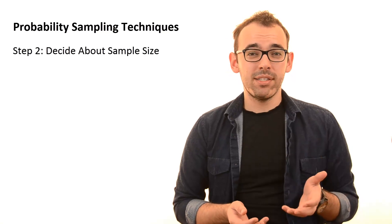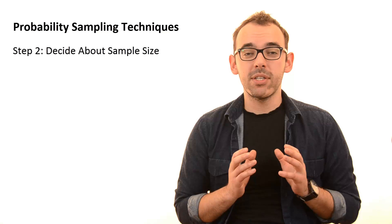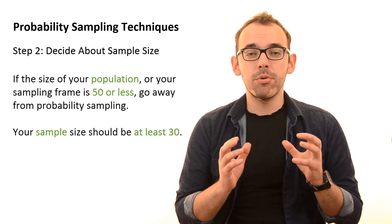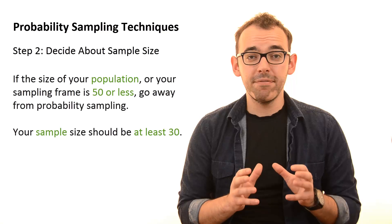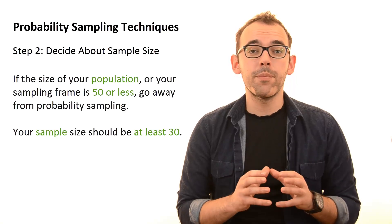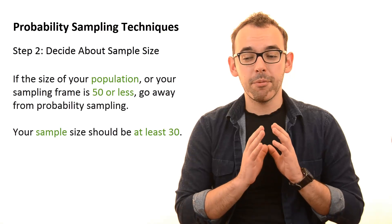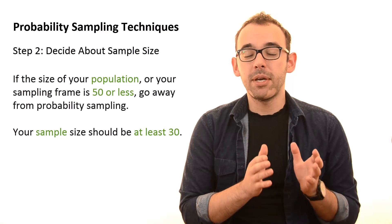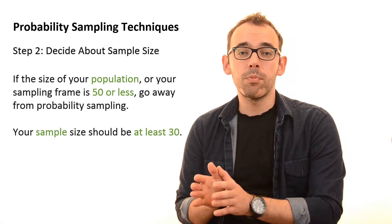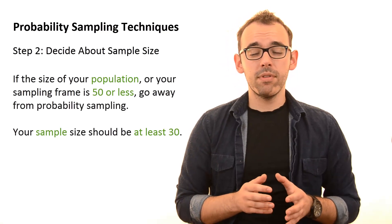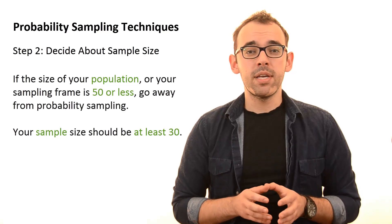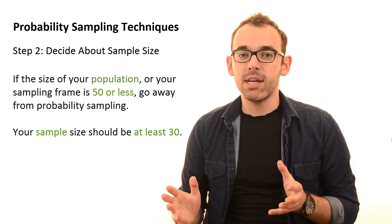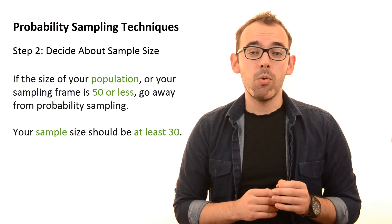Now here we come to statistics, and this is not the statistics course, so I will be simplifying a lot. There are two rules of thumb: if your population is less than 50, you should go away from probability sampling techniques — so if your population is 40 or 45, probability sampling techniques are not for you because some biases can occur, so rather go for non-probability sampling techniques. The second rule of thumb is that your sample size should be at least 30.